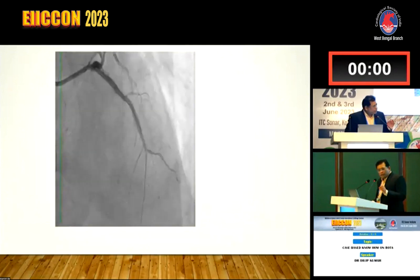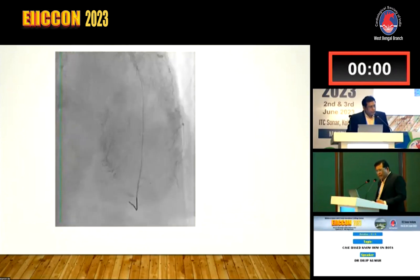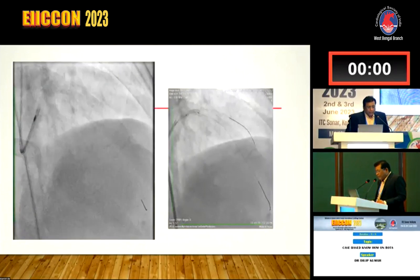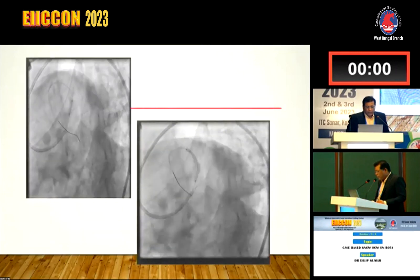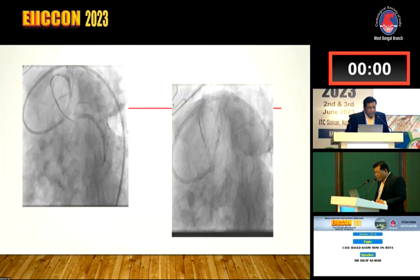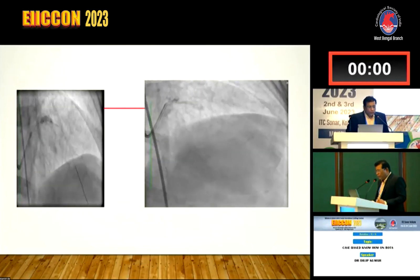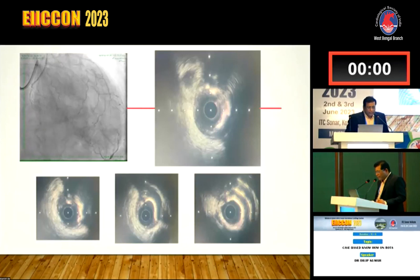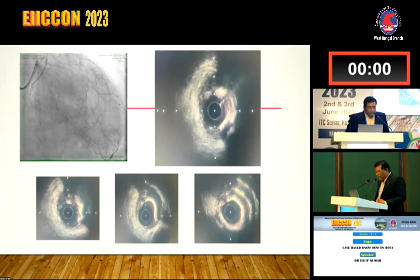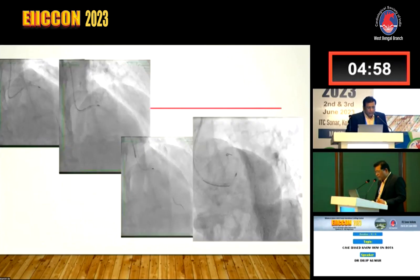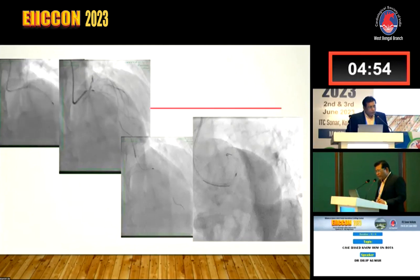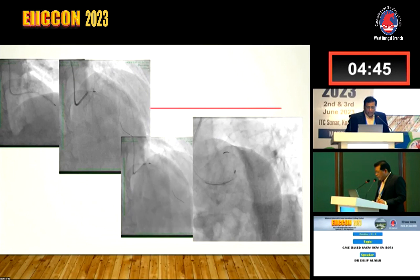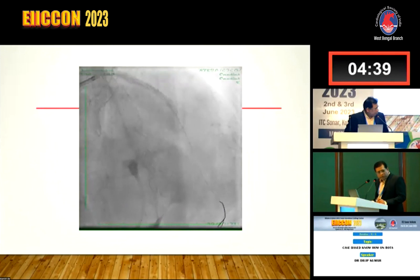Sometimes you can get a lesion where you do rota, do a cutting balloon, deploy a stent, but even after that your results are inadequate and you have to go with IVL. Rota-trypsy is needed in many cases depending on the lesion type. In this final case, a calcified but not very diffuse lesion with one angulation - the rota burr got stuck proximal to the lesion. We recrossed the LAD, dilated with a balloon, the rota burr was freed, and we could complete the procedure.